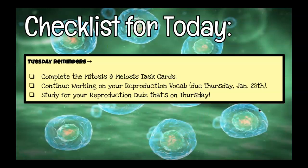Your checklist items: we're going to do some mitosis and meiosis task cards today, comparing and contrasting them, so make sure you submit them into Google Classroom. Make sure you are keeping up on your reproduction vocab because it's due on Thursday — that's two days away. You also have a reproduction quiz on Thursday, so make sure you know the differences between asexual and sexual reproduction, the types of asexual reproduction, and the differences between mitosis and meiosis.